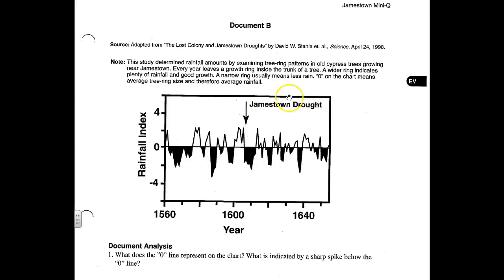Now we're on to document B on page 57. Document B is adapted from 'The Lost Colony and Jamestown Droughts,' written by David Stahl and others, and it comes from Science Magazine, April 24th of 1998. Science Magazine is a serious peer-reviewed journal, meaning articles in it are open to criticism from other professional scholars and historians, a practice that encourages accuracy in reporting.